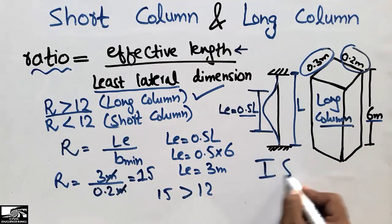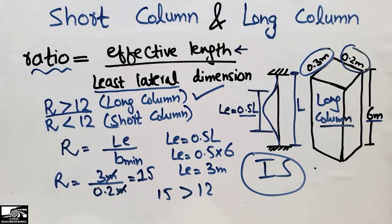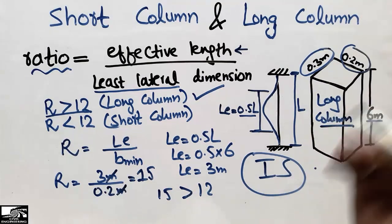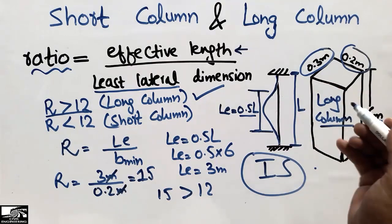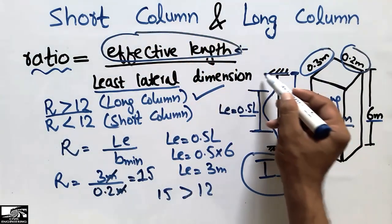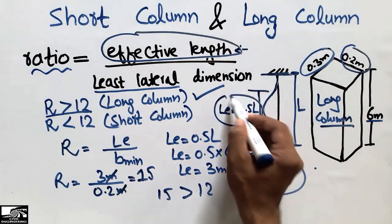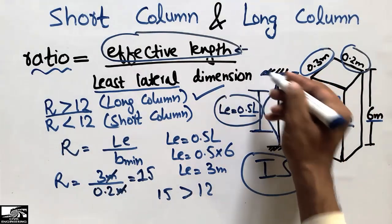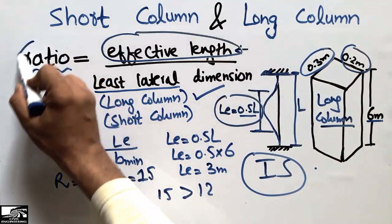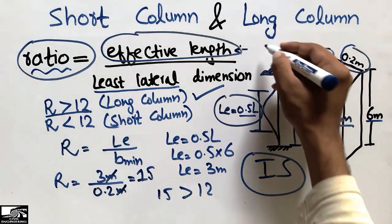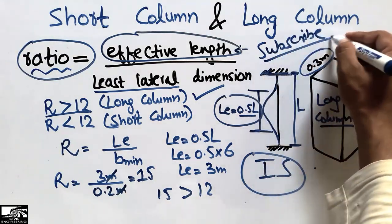This was the way to define and differentiate between the short column and the long column using one method. You can remember this method and apply it to other problems. Note that the effective length depends on the support conditions — for two fixed ends, the effective length is 0.5L, but it changes with different end conditions. Hope you guys understood the difference between these two types of columns. Don't forget to subscribe for daily civil engineering videos. Thank you for watching.